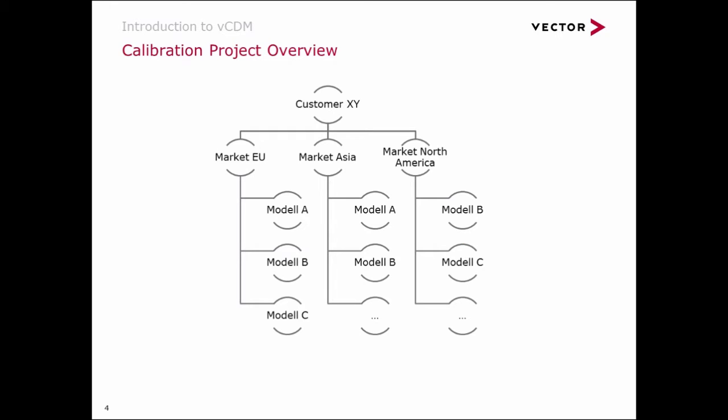Here's one example. We have a customer. There are different markets where he delivers his vehicles, and we have different models. So the customer in this case is our project, and the models are the calibration variants.